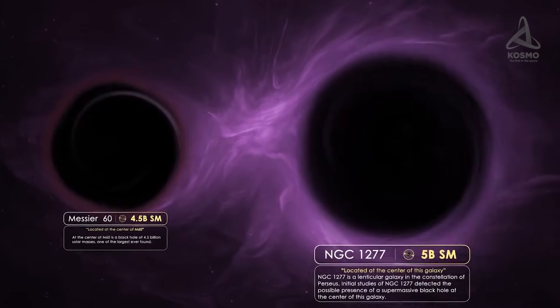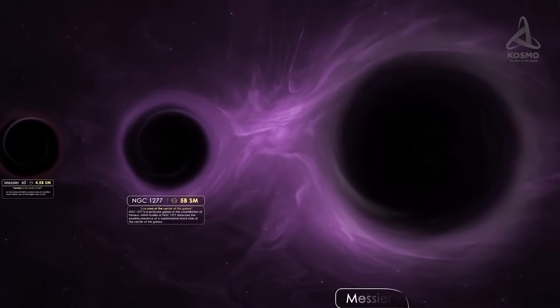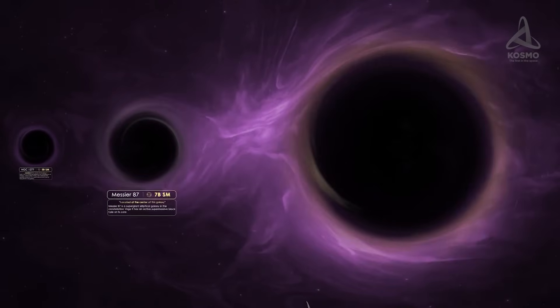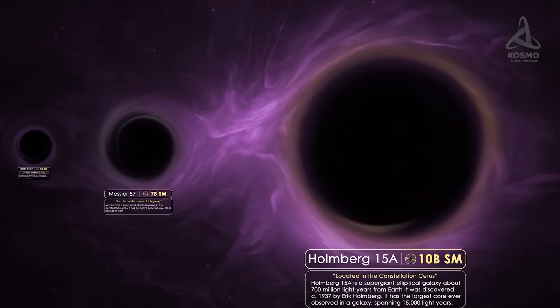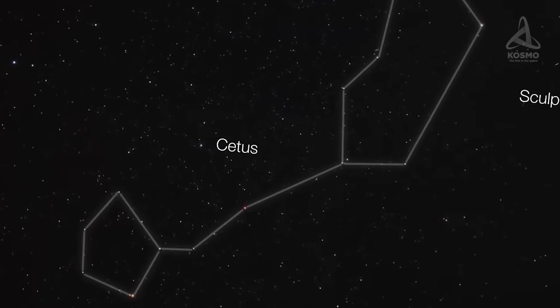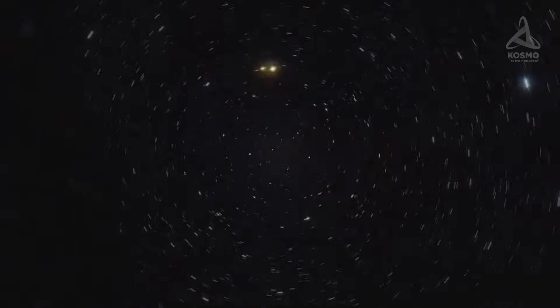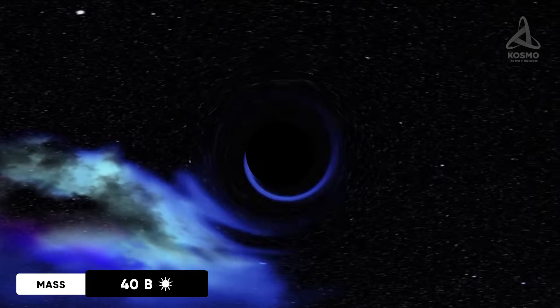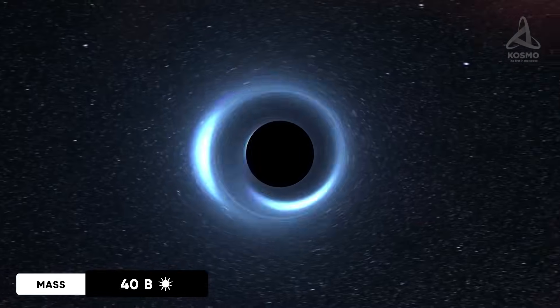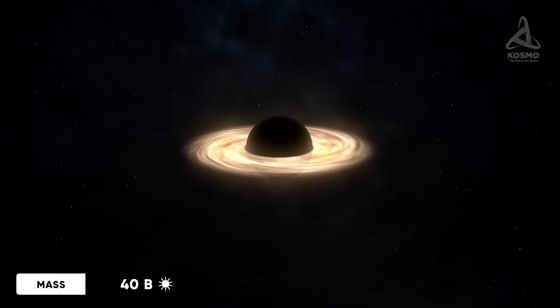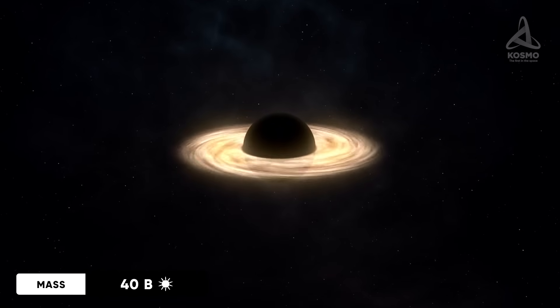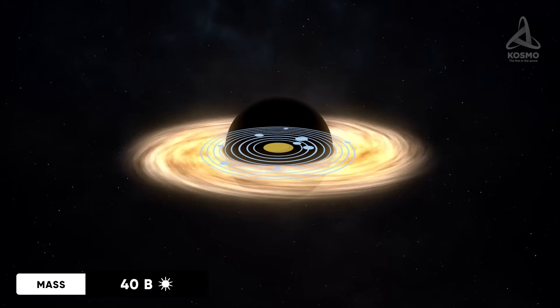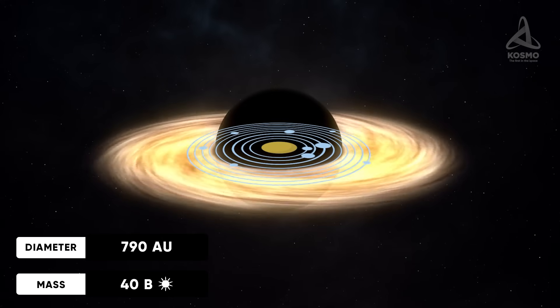Speaking about size, the undisputed holder of the first place on the list is admittedly another well-known space object, namely the black hole in the center of Holmberg 15A, a supermassive elliptical galaxy located in the constellation Cetus, or the whale, 700 million light-years away from Earth. This black hole isn't a champion in terms of its mass, which is 40 billion times the Sun's mass. Its dimensions, however, can't but amaze. According to today's estimates, the event horizon of this black hole could be as big as to accommodate the entire solar system. Its diameter is approximately 790 astronomical units.